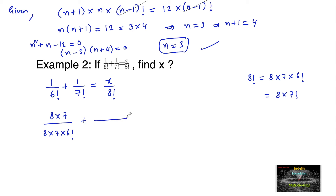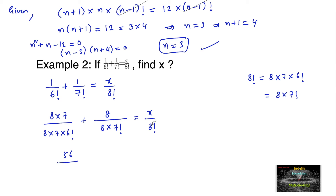And for 1 upon 7 factorial, let's multiply with only 8, giving us 8 over 8 into 7 factorial. So we can write 8 into 7 — that is 56 — upon 8 into 7 into 6 factorial, which is 8 factorial. And 8 upon 8 into 7 factorial, which is again 8 factorial. This equals x upon 8 factorial.